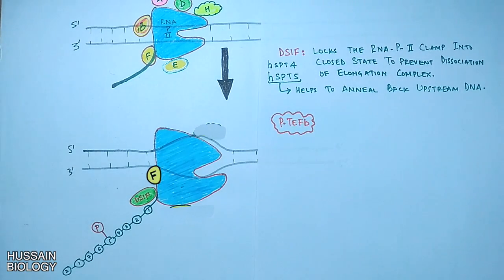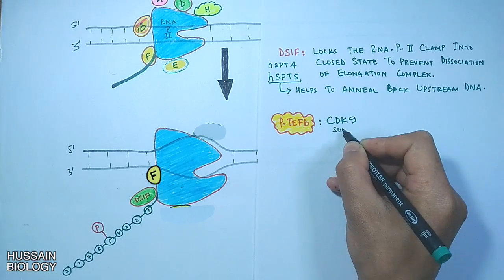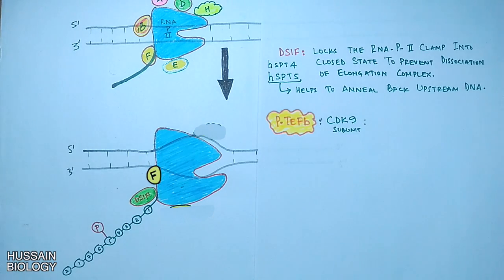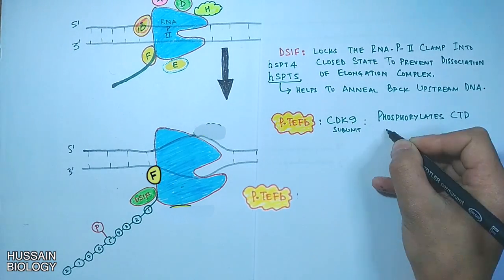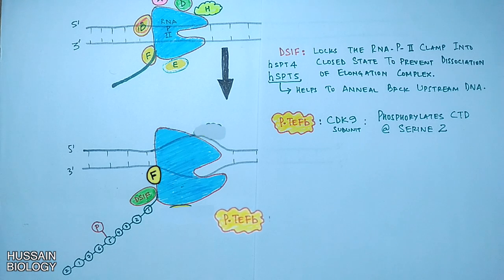Then we have the P-TEFb elongation factor. This factor has CDK9 kinase subunit. This CDK9 kinase phosphorylates the CTD at serine 2 position. Here we see it phosphorylates the CTD at serine 2.